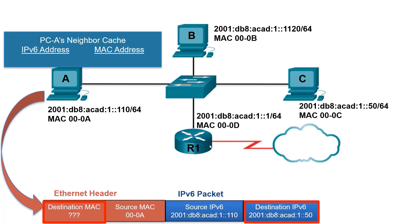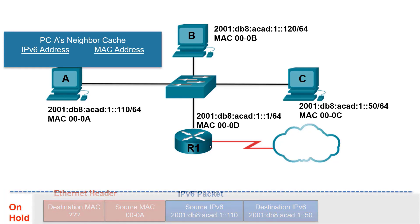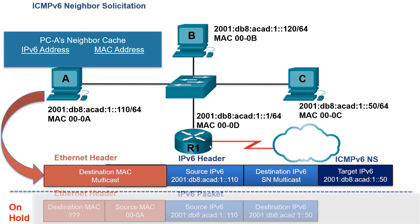MAC addresses are shown here as 4 hex symbols instead of the usual 12. As we can see, there is no MAC entry associated with this IPv6 address. The IPv6 packet is placed on hold, and Host A creates an ICMPv6 Neighbor Solicitation Message. This is similar to an ARP request used for IPv4 address resolution. One significant difference is that ARP messages are sent directly over Ethernet — IPv4 is not involved. The IPv6 address resolution process uses ICMPv6, which is then encapsulated in an IPv6 header, and then encapsulated in an Ethernet header and trailer.